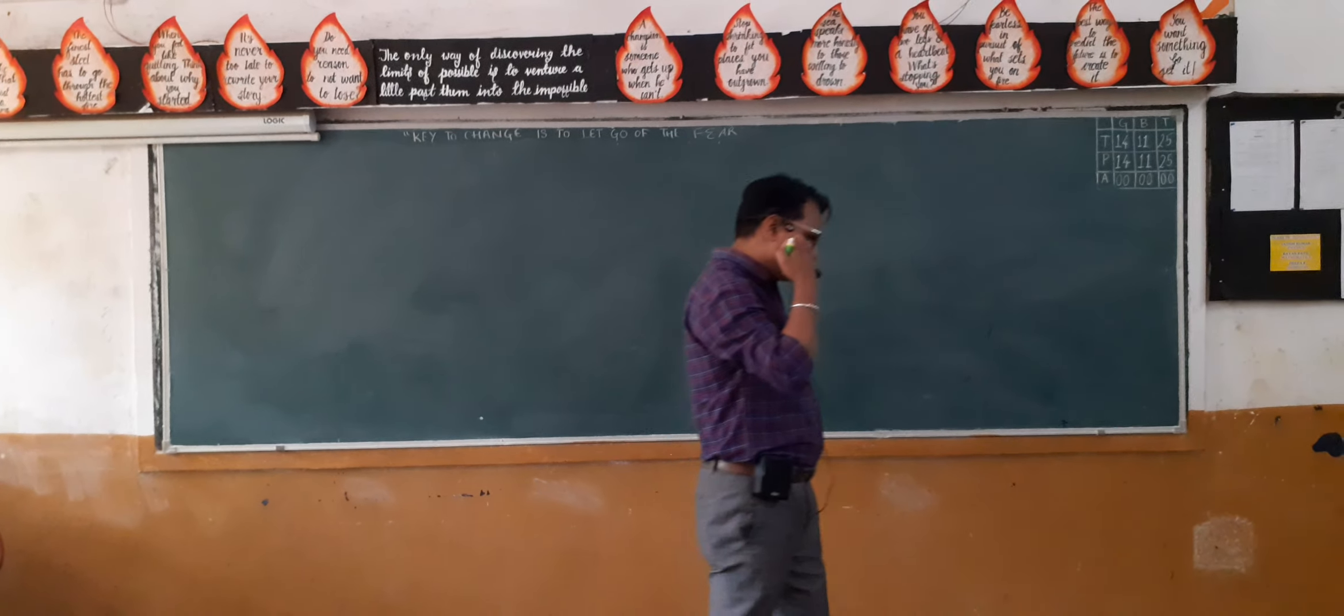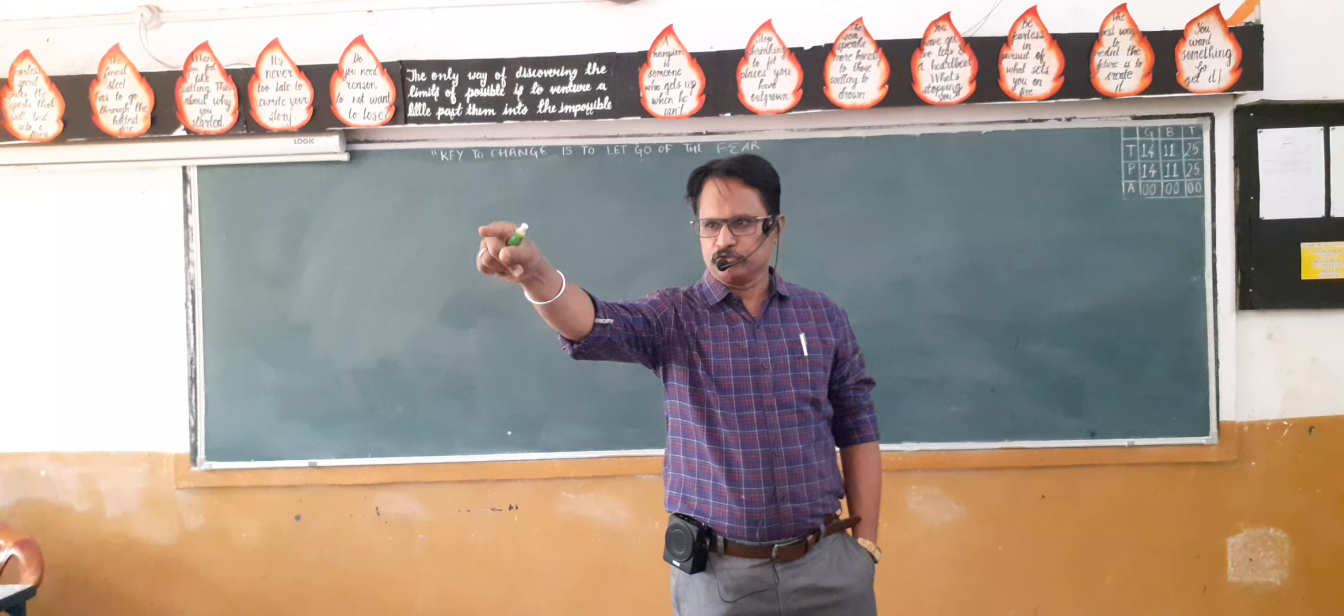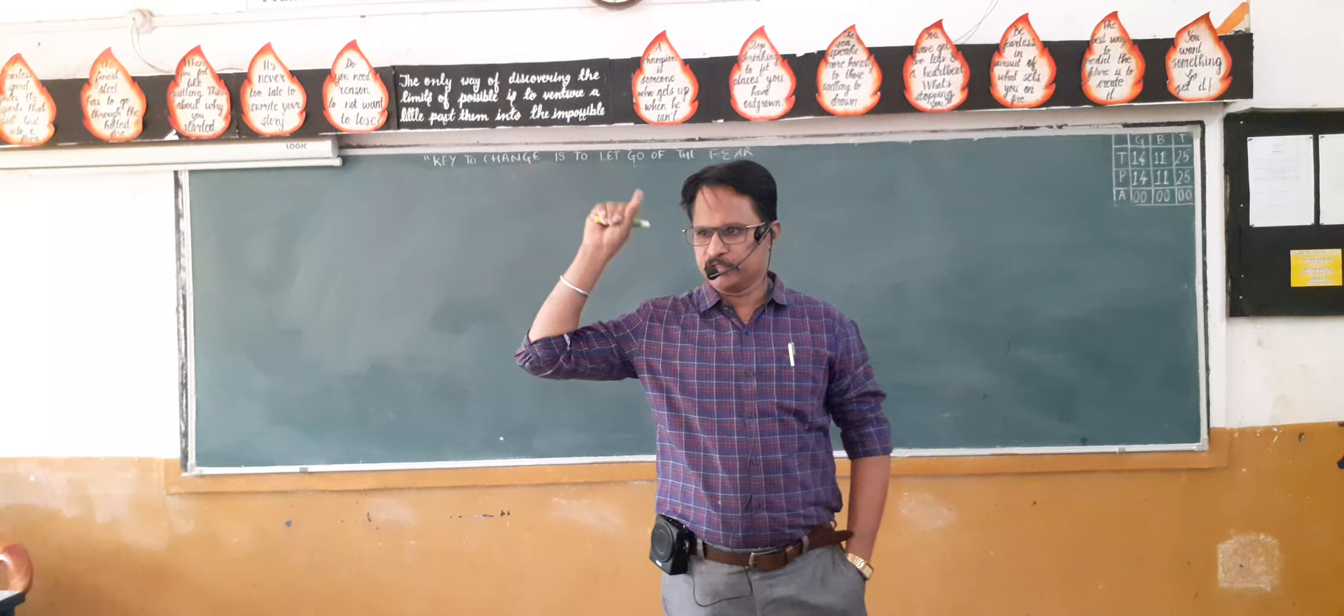Okay children, so let us discuss an example when the electric flux through a surface is to be taken as positive, when it is to be taken as negative, and when it is zero.